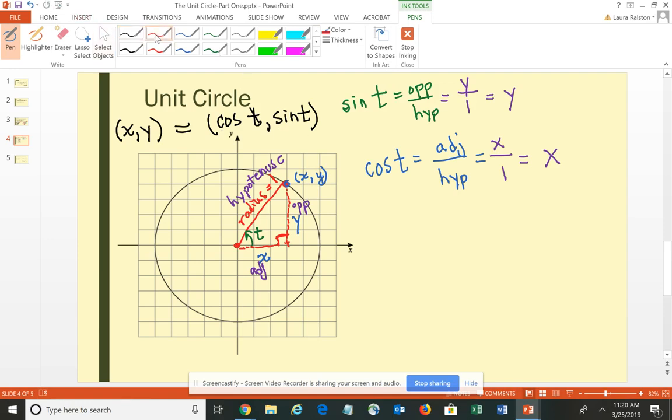And then the third one that we have there that we use a lot is the tangent. So the tangent of angle T is opposite over adjacent, which would give us y divided by x. Now we do have to have a caveat here that x cannot be 0 because you cannot have 0 in the denominator of a fraction – so the ratio of y to x becomes our tangent.